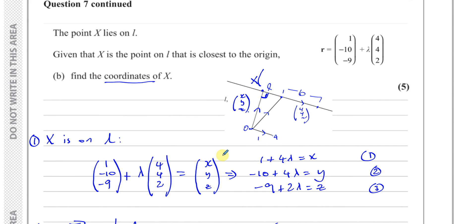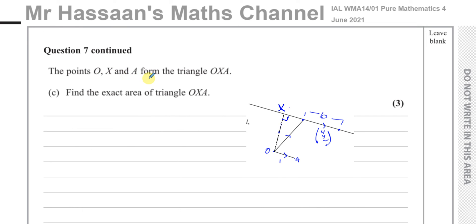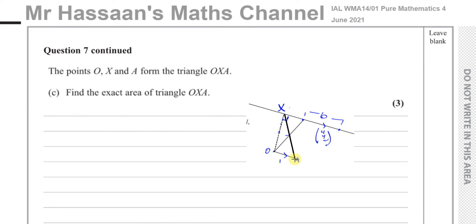For part C, the points O, X, and A form triangle OXA. From our diagram, OA is parallel to line L, so the angle at X between OX and the line is a right angle — just as OX is perpendicular to L. So we have a right-angled triangle with the right angle at X, with OA as one side of length 1 unit.